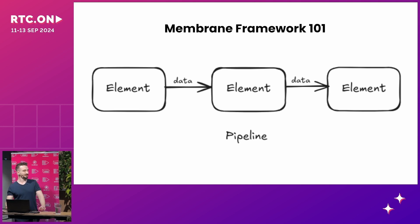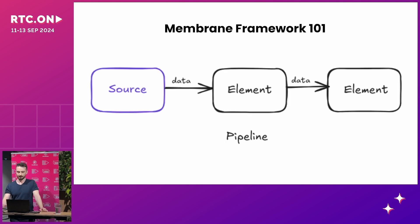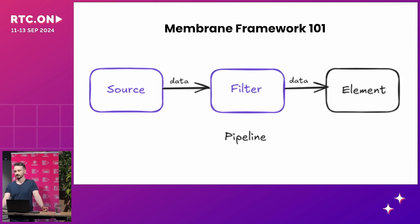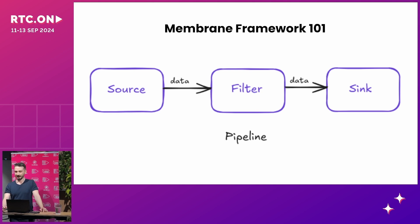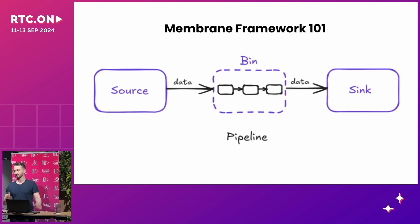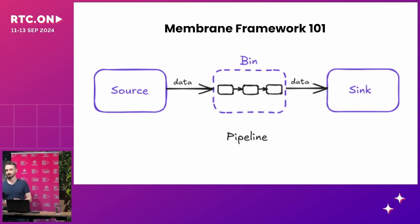Here's a quick Membrane 101. You have elements: data goes in, it gets transformed, and then it goes out. The three main types of elements are source, where data comes in; filter, where it gets transformed; and sink, where it goes out of the pipeline. We also have bins, which are containers for elements that need to work together — these are like mini pipelines inside your bigger pipeline.